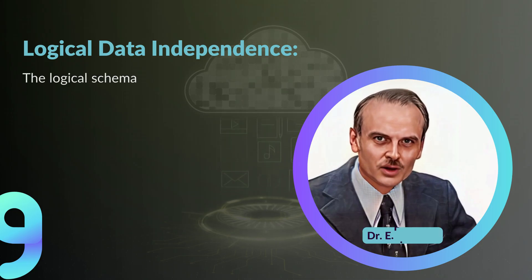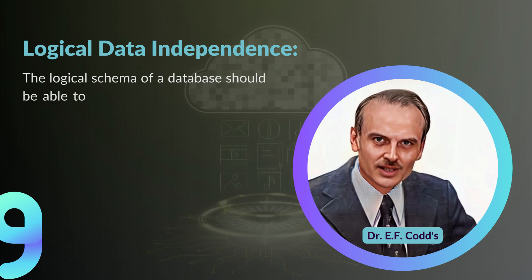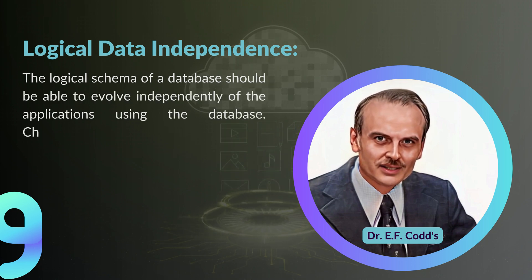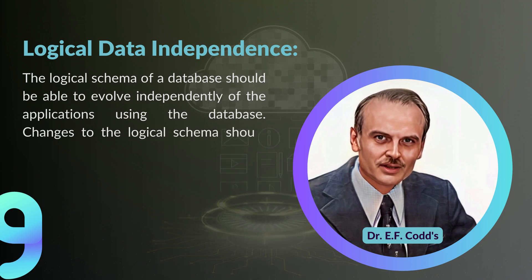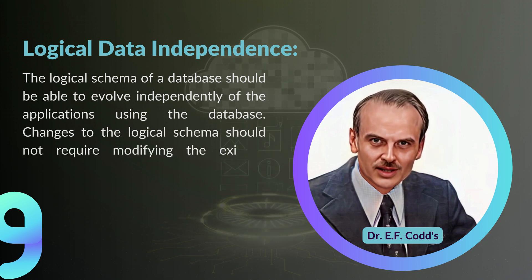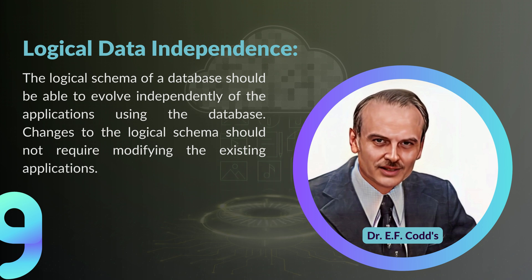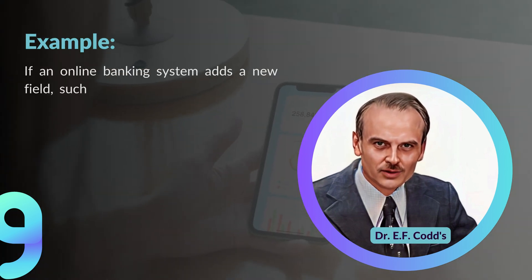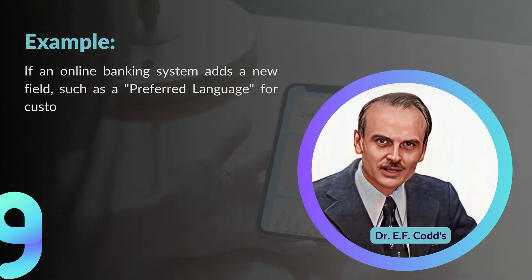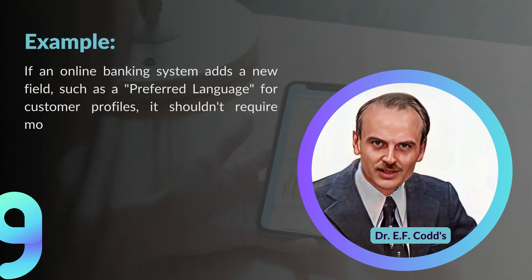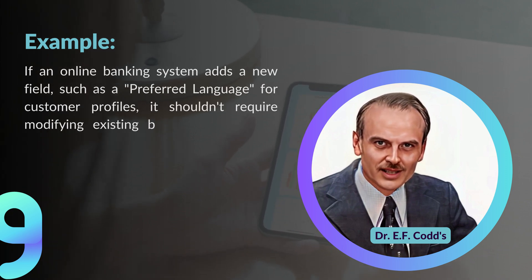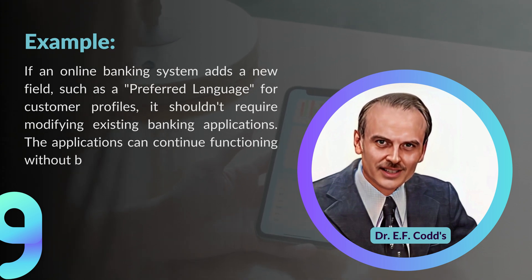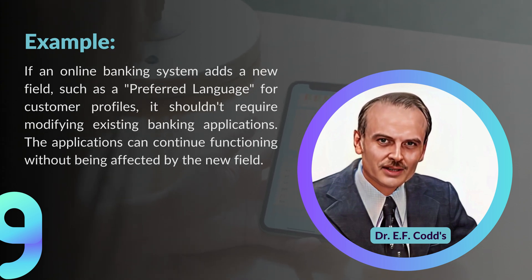Rule number nine: Logical Data Independence. The logical schema of a database should be able to evolve independently of the applications using the database, and changes to the logical schema should not require modifying existing applications. For example, if an online banking system adds a new field such as a preferred language for customer profiles, it shouldn't require modifying existing banking applications — they can continue functioning without being affected by the new field.